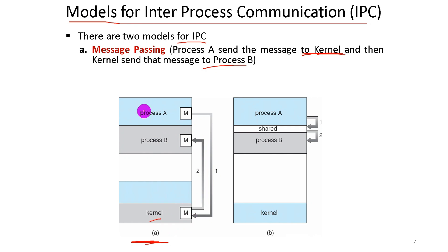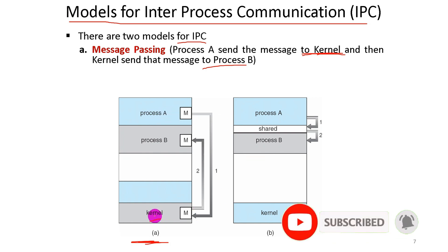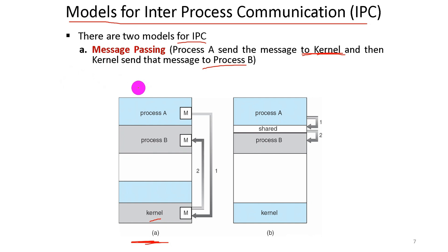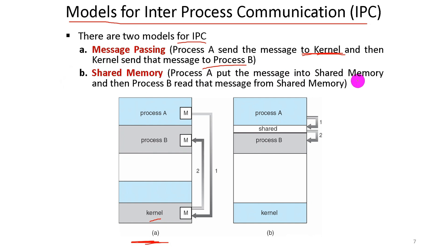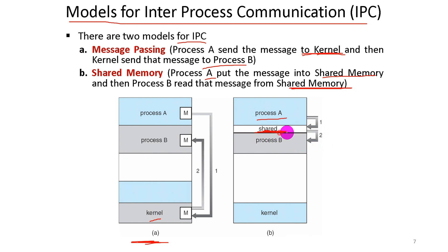When process A wants to send a message to process B, A sends the message to the kernel, and the kernel sends it to the targeted receiver, process B. The second model for IPC is shared memory. Process A puts a message into shared memory, then process B reads the message from shared memory. This is simpler, while message passing is more complex.